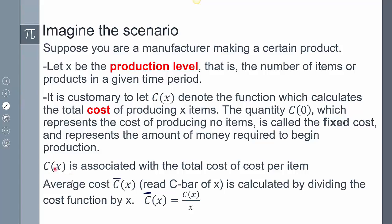Now the total cost per item, we can find this average cost, read C-bar of x. So C-bar of x, we can calculate that by dividing the cost function by x, so that's a definition.